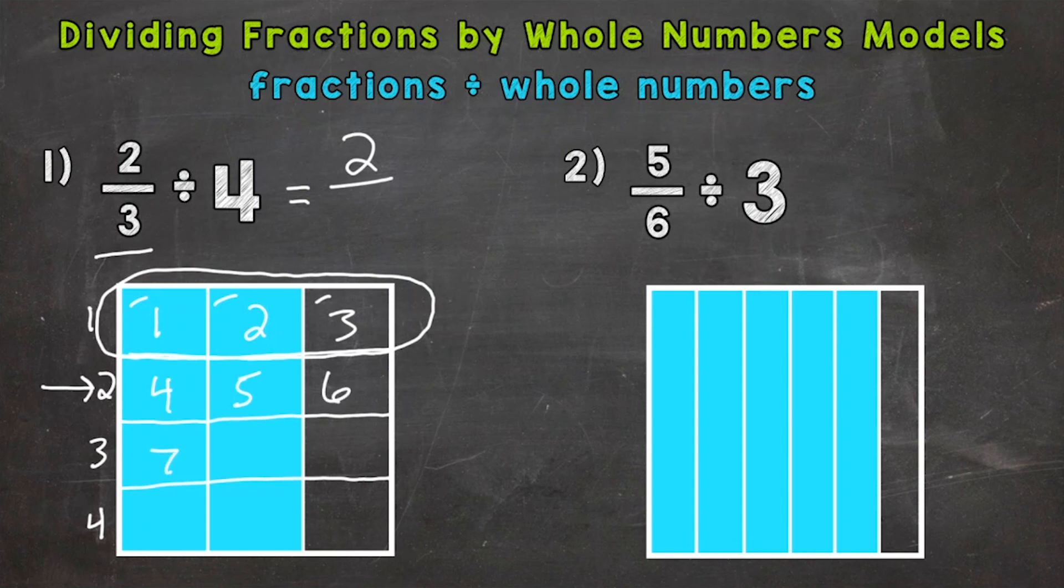Seven, eight, nine, ten, eleven, twelve. And that will be our denominator. Or, we have an array here, so you can do four by three. Four times three gives us that twelve. Either way, gives us the same answer of twelve.